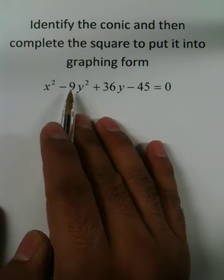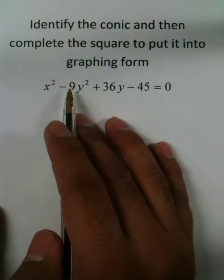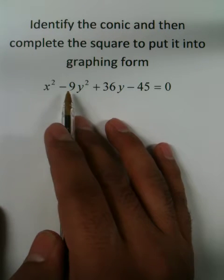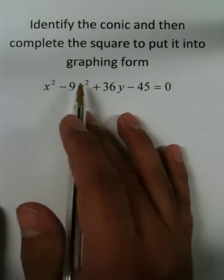First of all, I notice I have a number in front of my y squared, which either tells me I have an ellipse or a hyperbola. But because the 9 is negative, it is definitely a hyperbola.